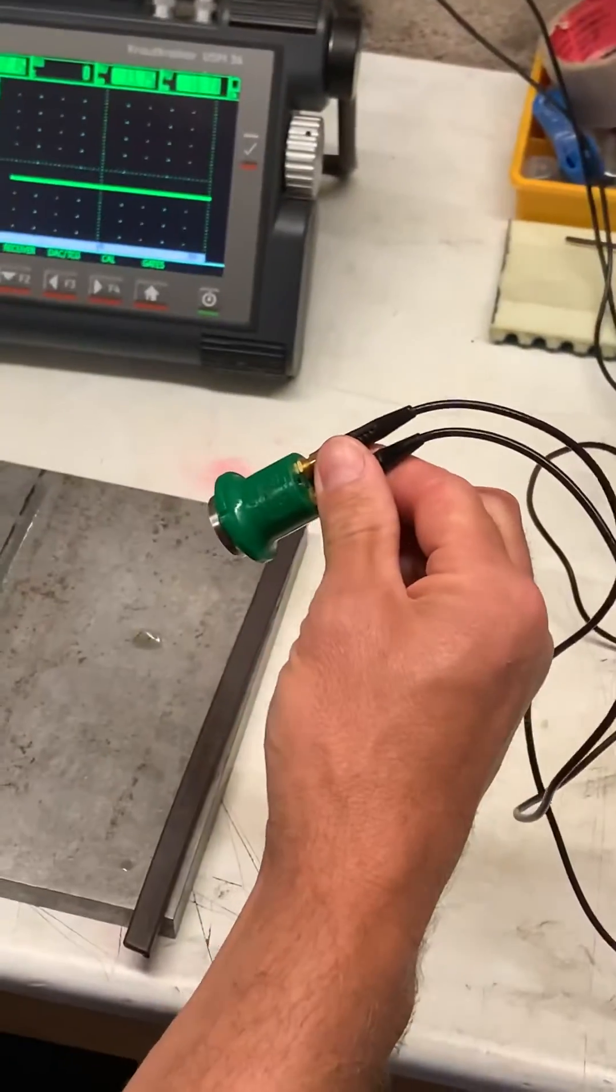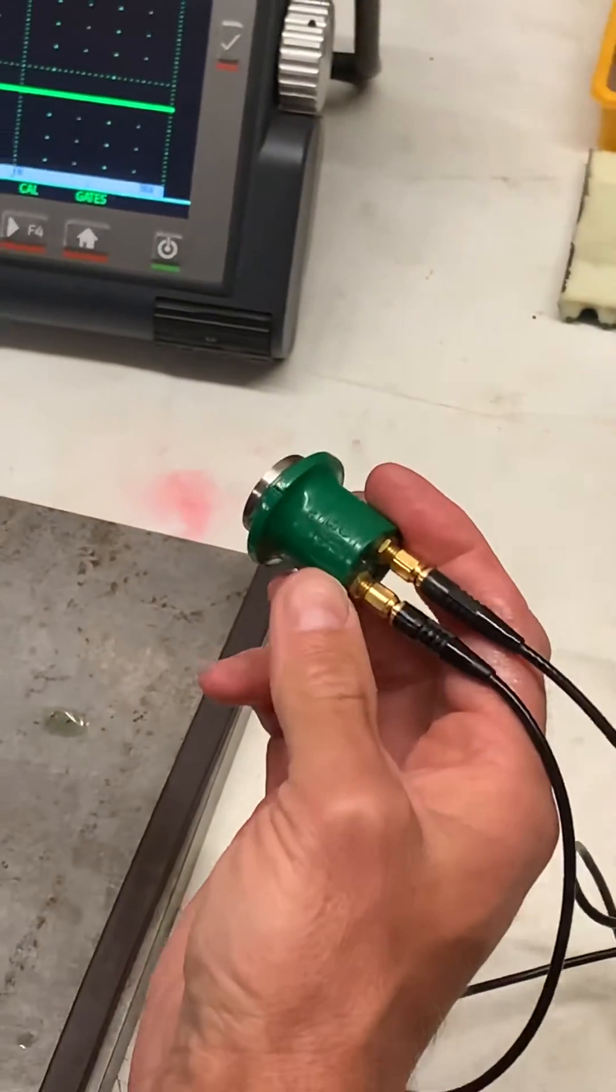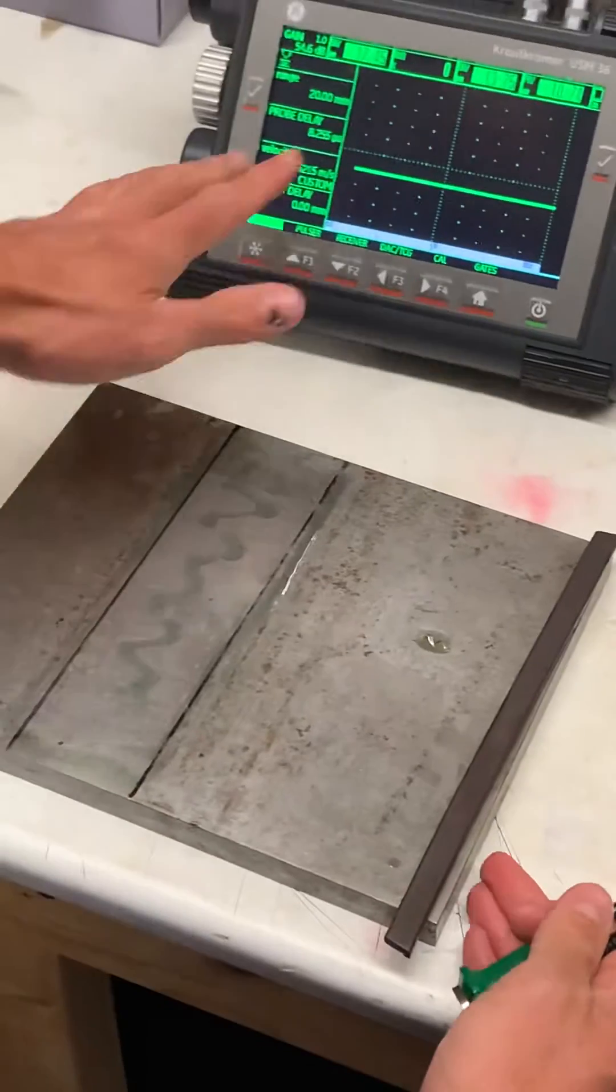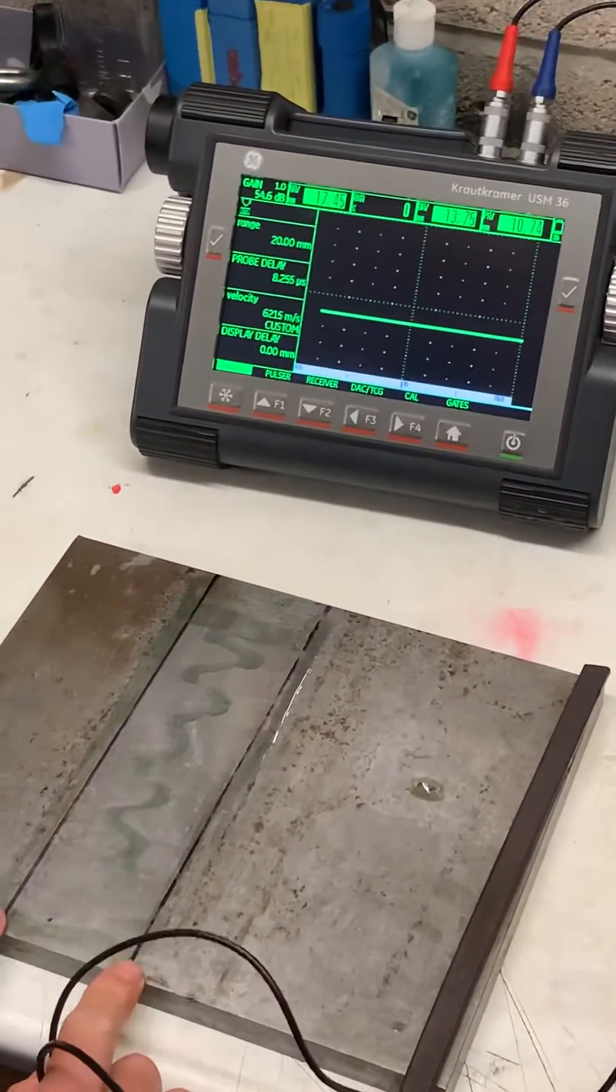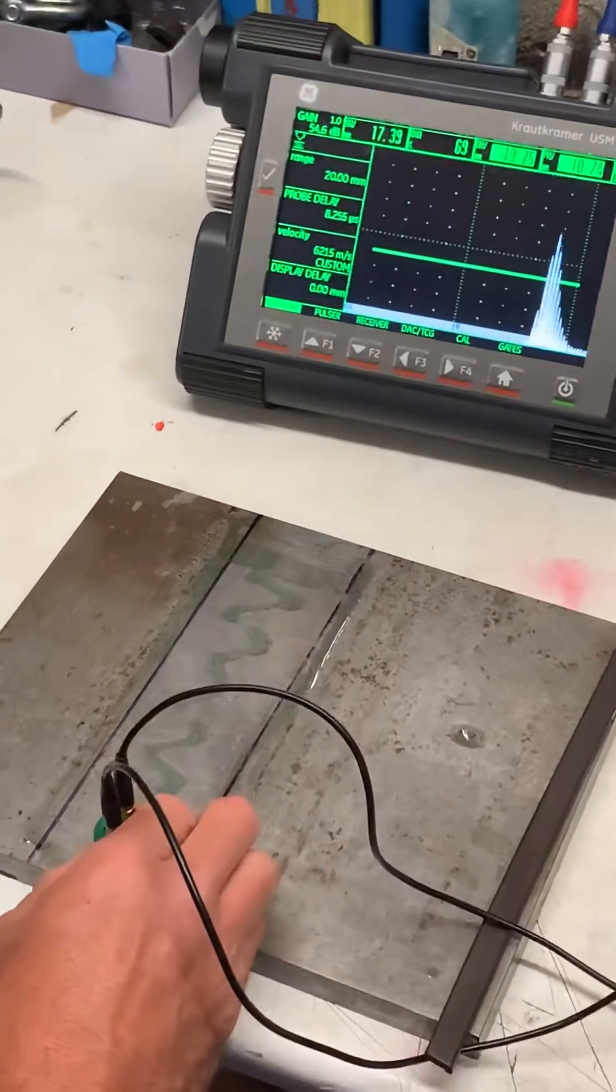This is a typical probe used for thickness checking or looking for corrosion in the oil and gas environment. What we're going to do today is use this UT set and scan the area between these two lines to see if we've got any corrosion in there.